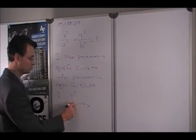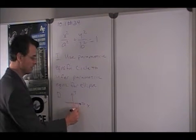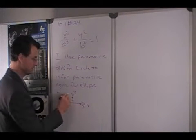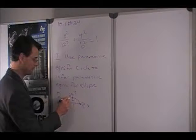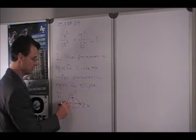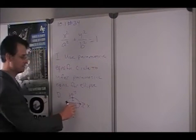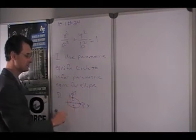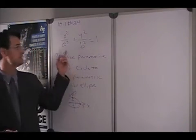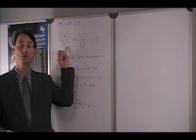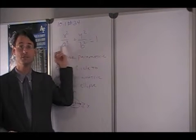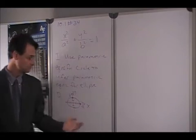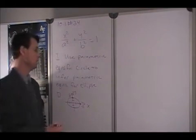Let's suppose a is 3 and b is 2. Then we know the ellipse would cross the x-axis at plus and minus 3, and the y-axis at plus and minus 2. In other words, a tells us the half-width of the ellipse in the horizontal direction, and b tells us the half-height in the vertical direction.